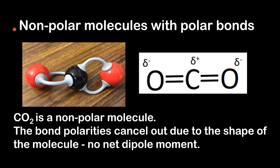Next we'll look at examples of non-polar molecules with polar bonds. Carbon dioxide is a non-polar molecule even though it has two polar bonds. The polar bonds arise because of the difference in electronegativity between carbon and oxygen — the oxygen has a negative dipole and the carbon a positive dipole. Because of the linear shape of the molecule, the bond polarities cancel out, and we say the molecule has no net dipole moment, which means it's non-polar.